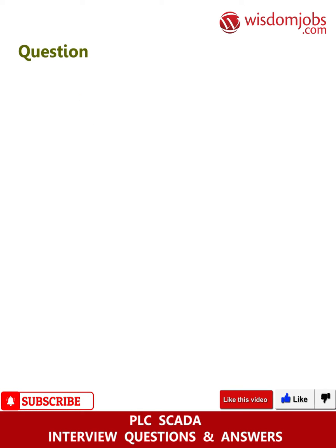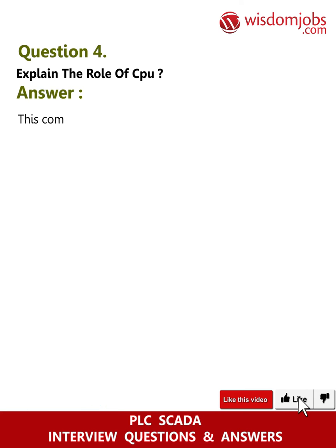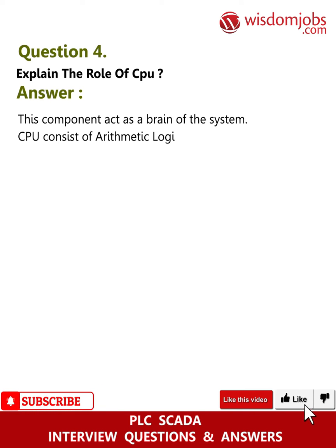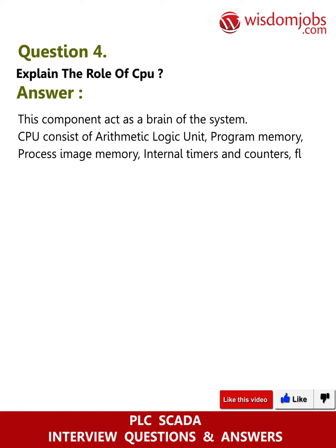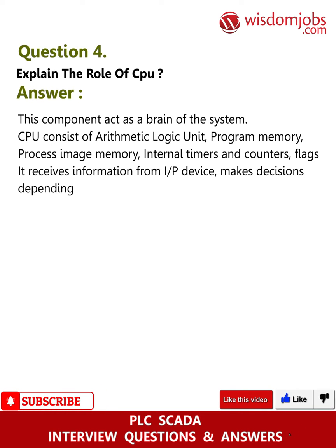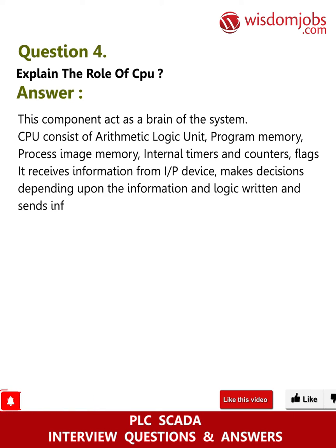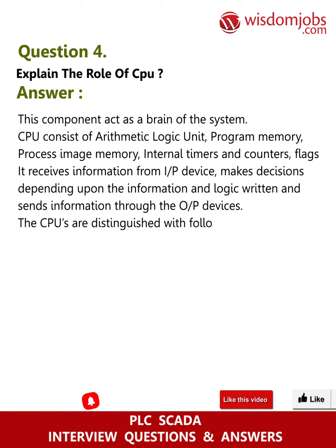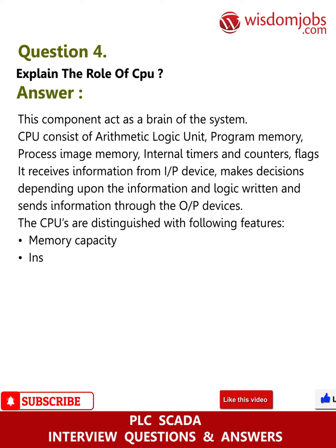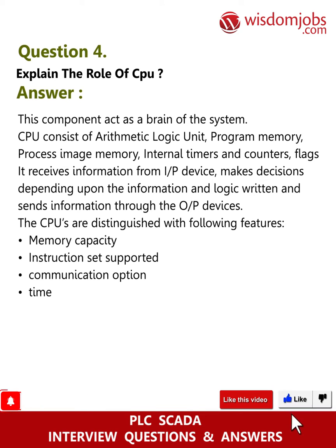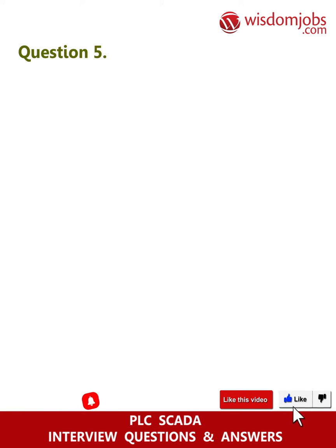Question 4: Explain the role of CPU. Answer: This component acts as the brain of the system. The CPU consists of an arithmetic logic unit, program memory, process image memory, internal timers and counters, and flags. It receives information from input devices, makes decisions based on the information and logic written, and sends information through output devices. CPUs are distinguished by memory capacity, instruction set supported, communication options, and time required to execute the control program.